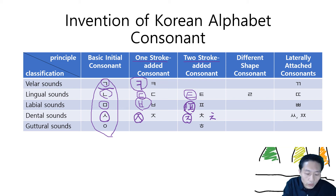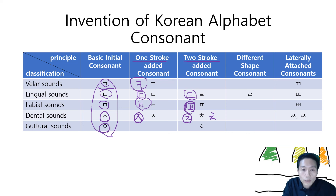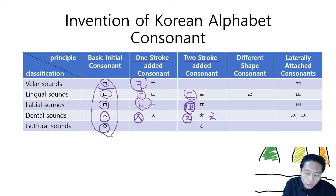And let's look at 이응. This is the shape of the throat — it's a guttural sound. You add two more strokes and we get 히읗.